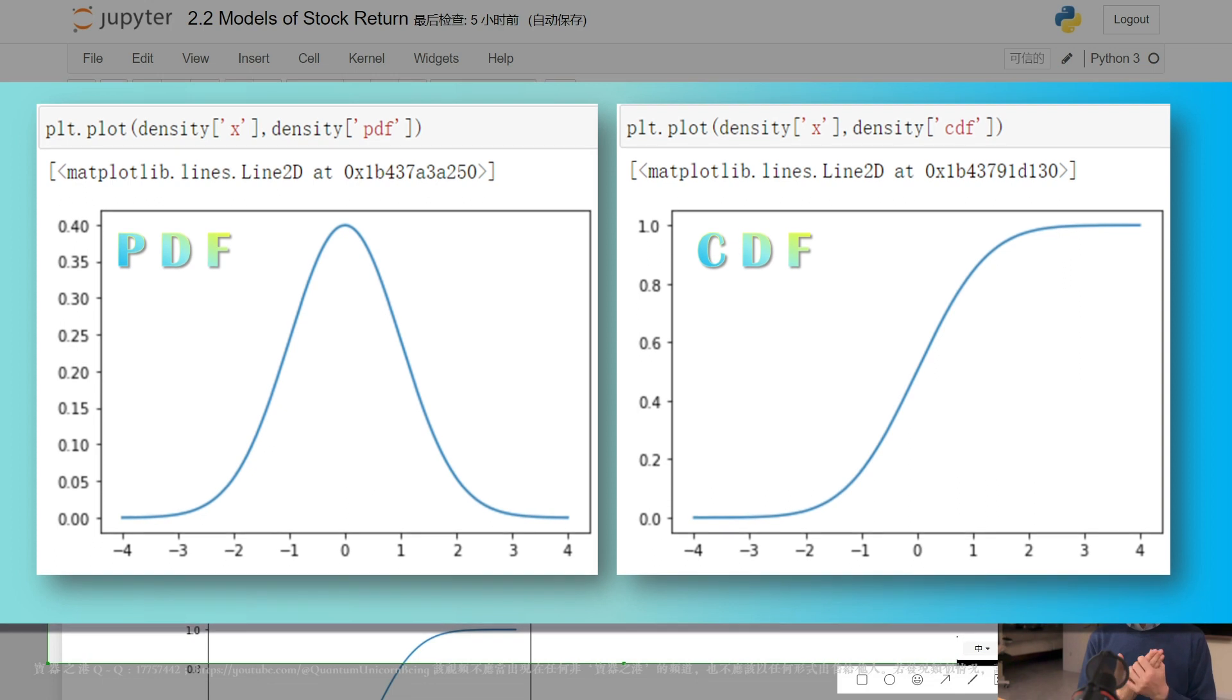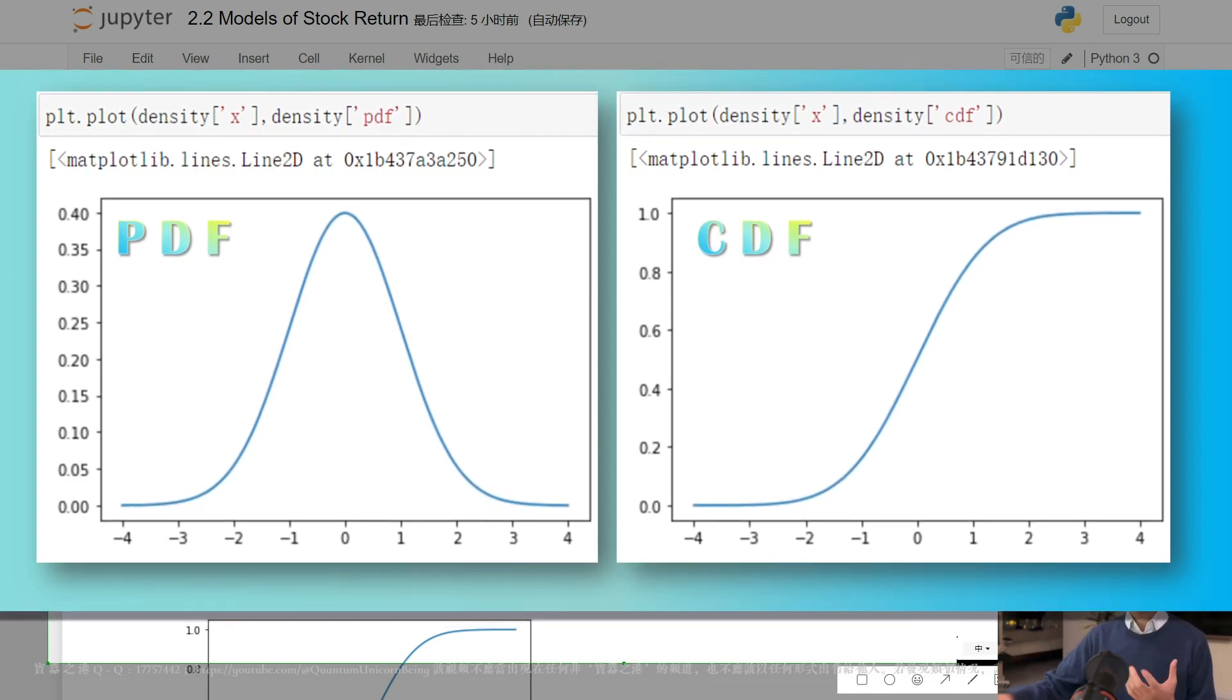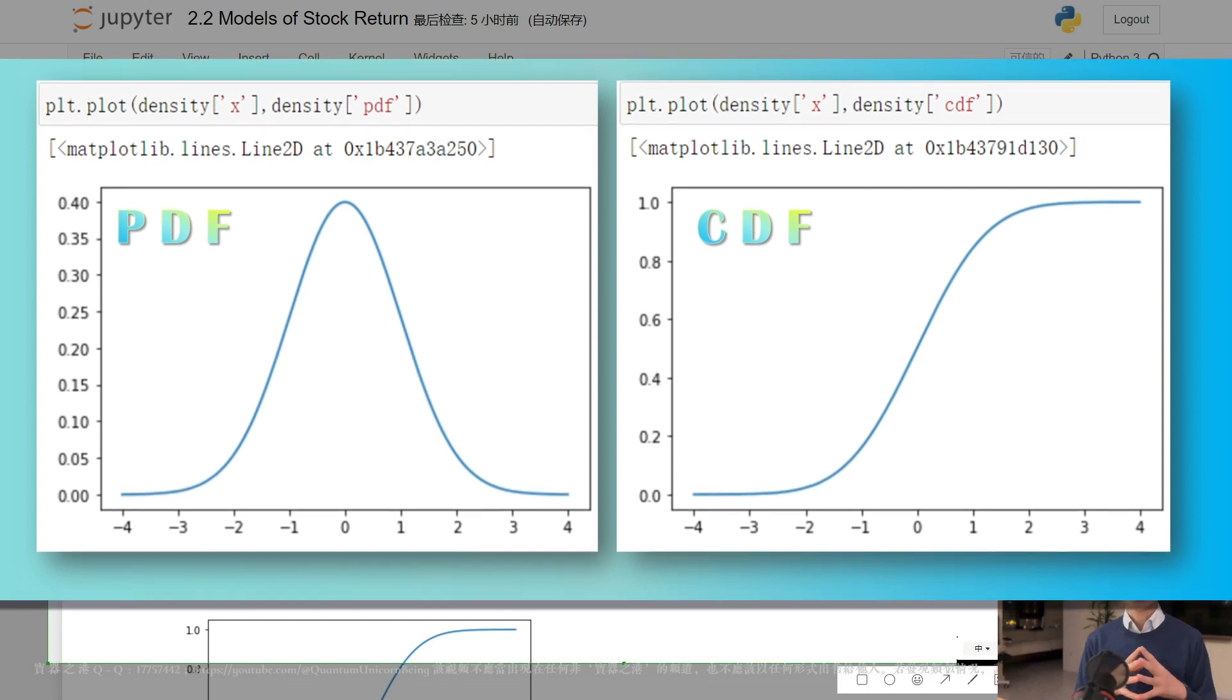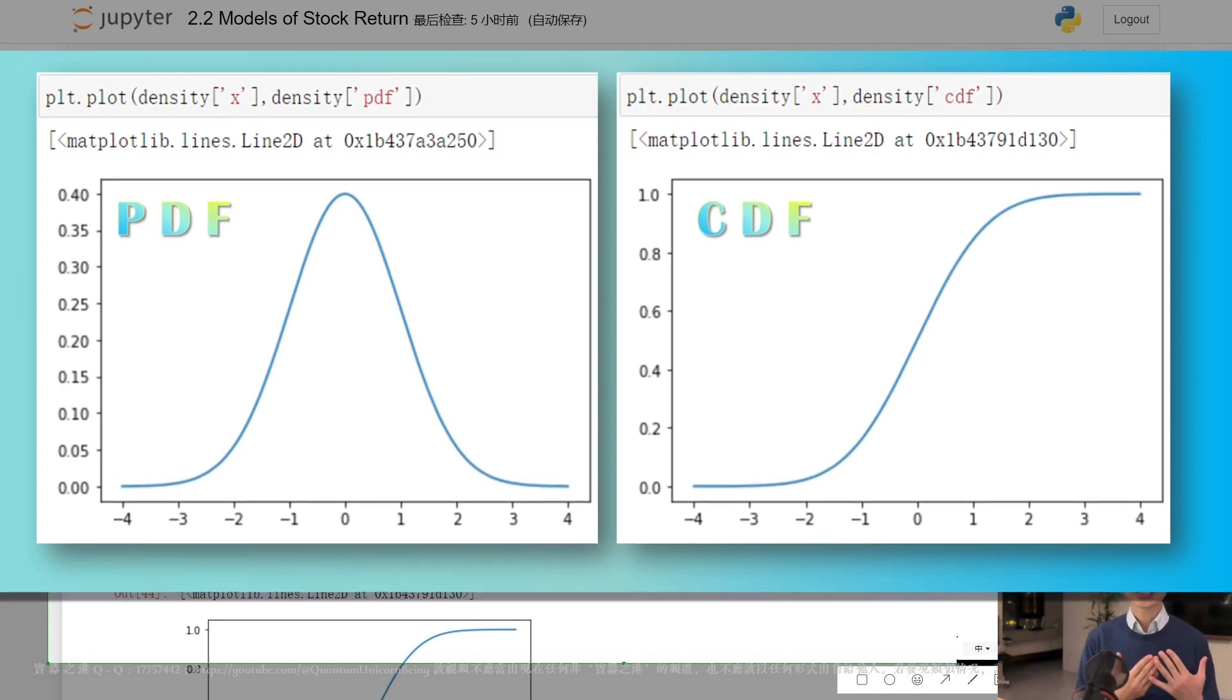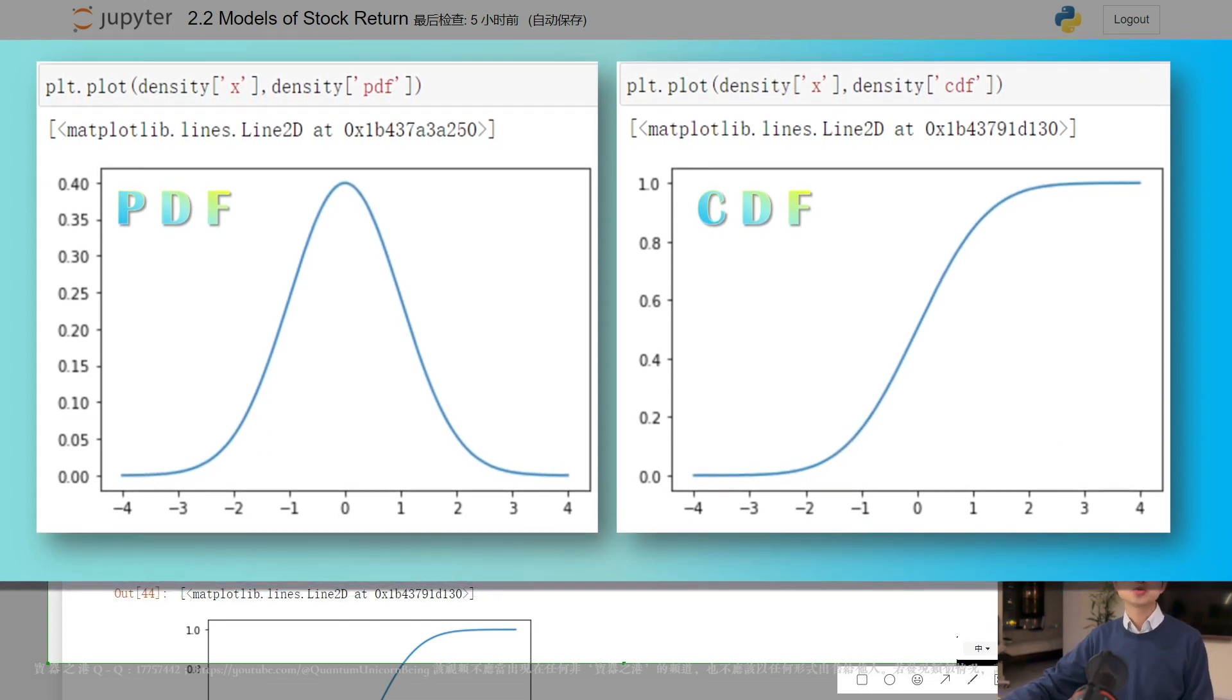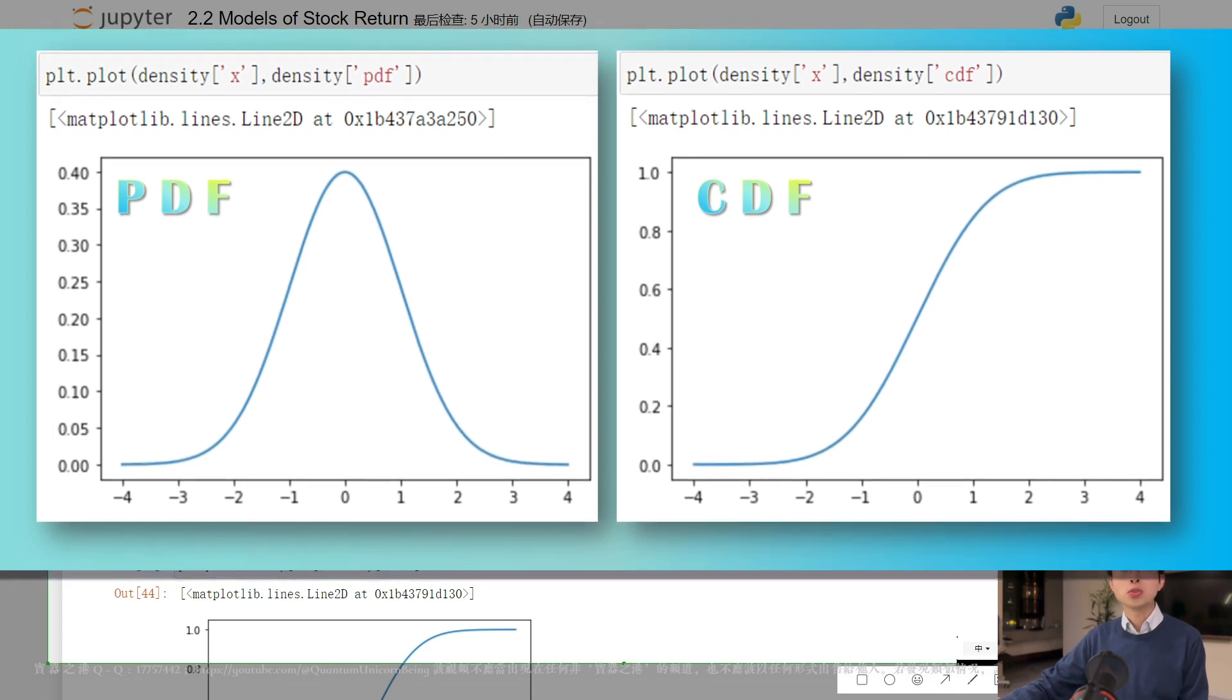By understanding the distribution of stock returns, we can better manage financial risk and make informed investment decisions. On the right side is the cumulative distribution function, which represents the probability that a stock return takes on values greater than or equal to a given value of x. As x grows larger, the cumulative probability approaches 1. One way to model daily stock returns is to assume that they follow a normal distribution.